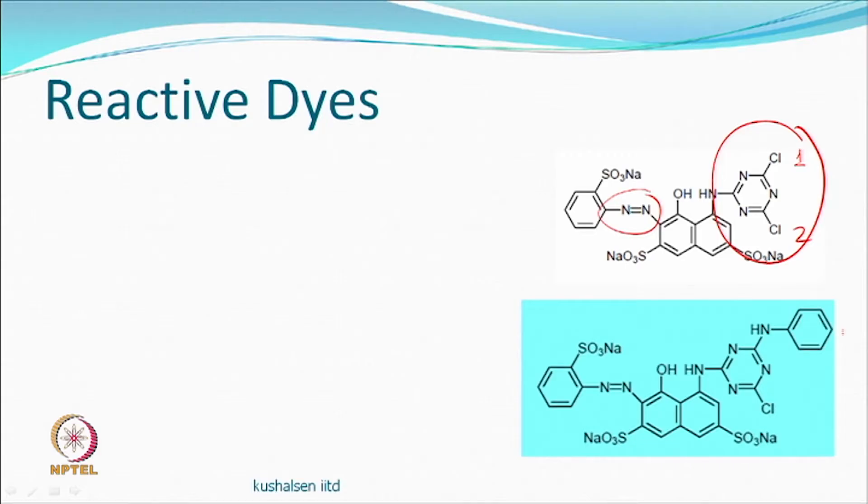One way the same group was modified is that you have only 1 chlorine, so you have a monochlorotriazine group — similar dye but with that change — and this is sometimes known as a hot brand dye. These are the ones which will be preferred for dyeing compared to the dichlorotriazine type.